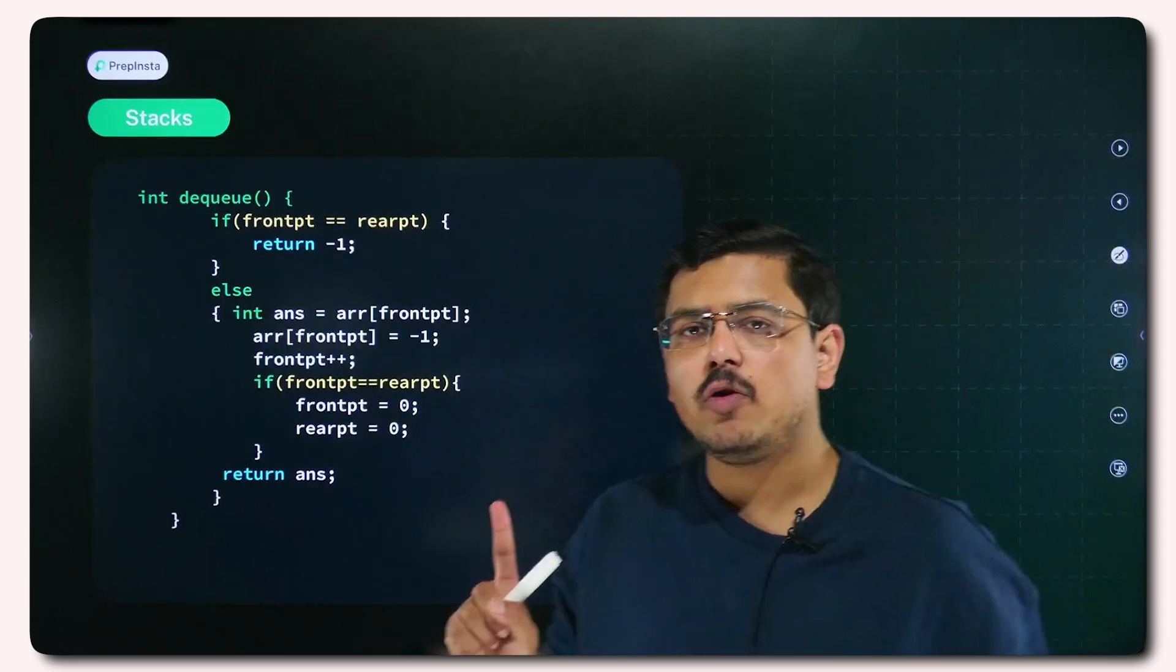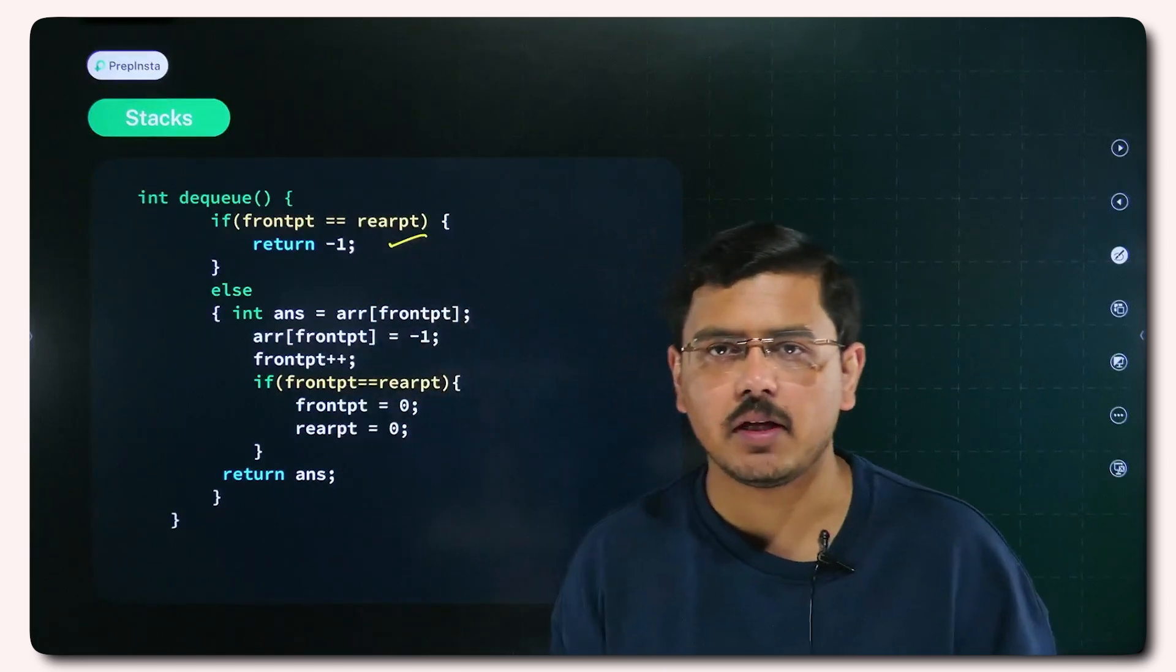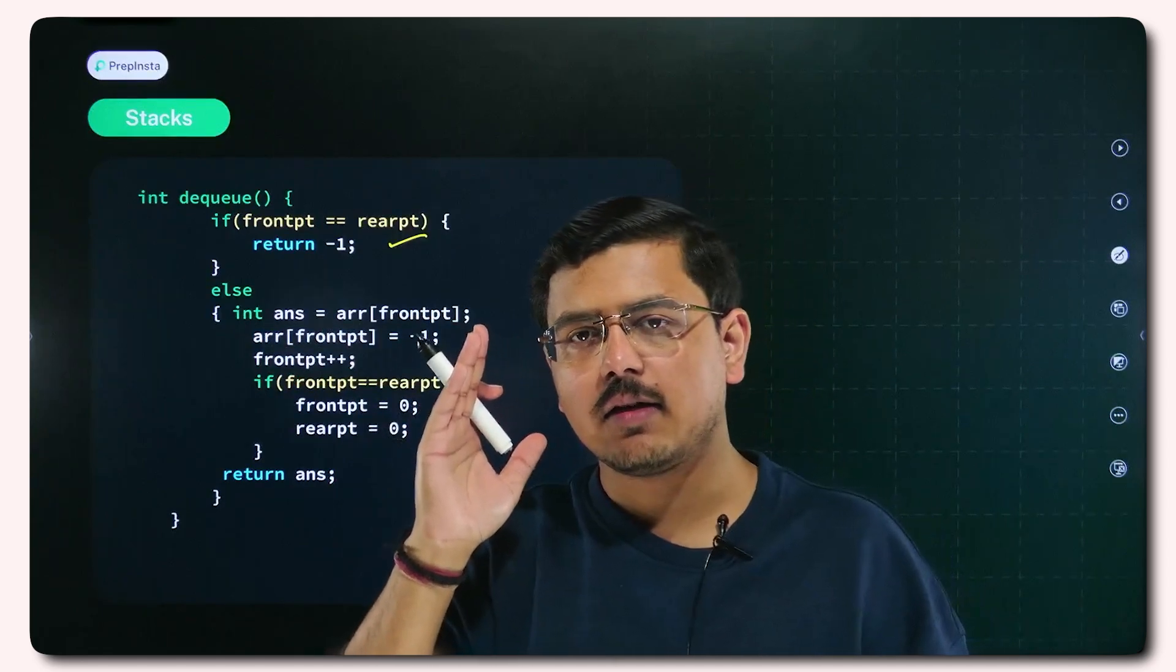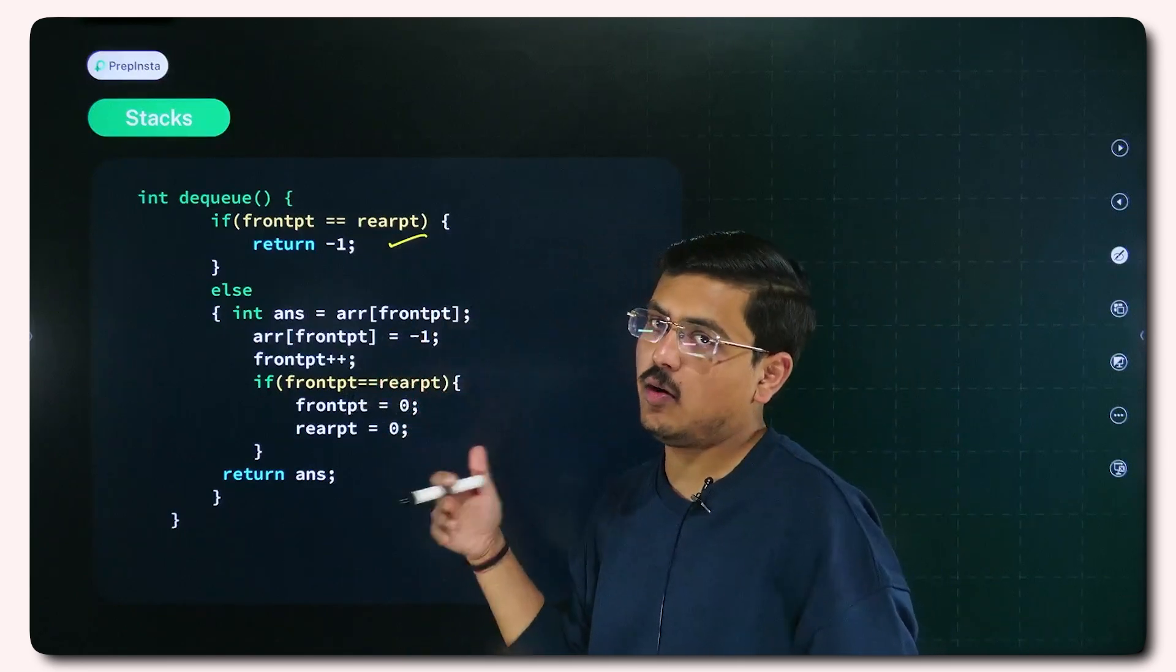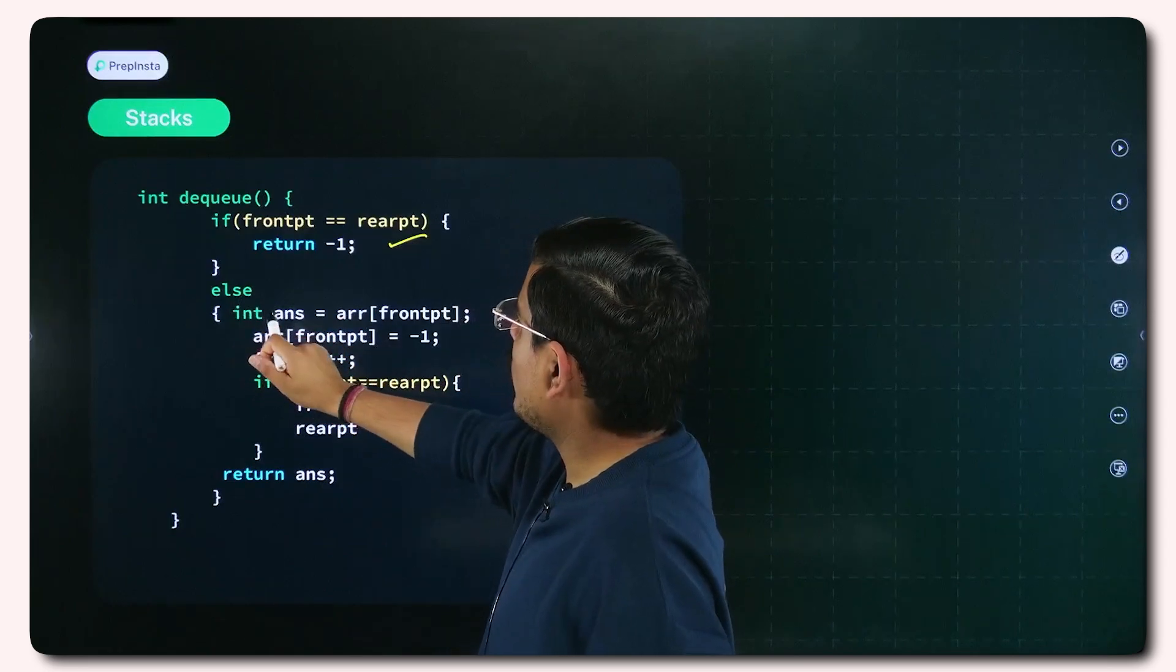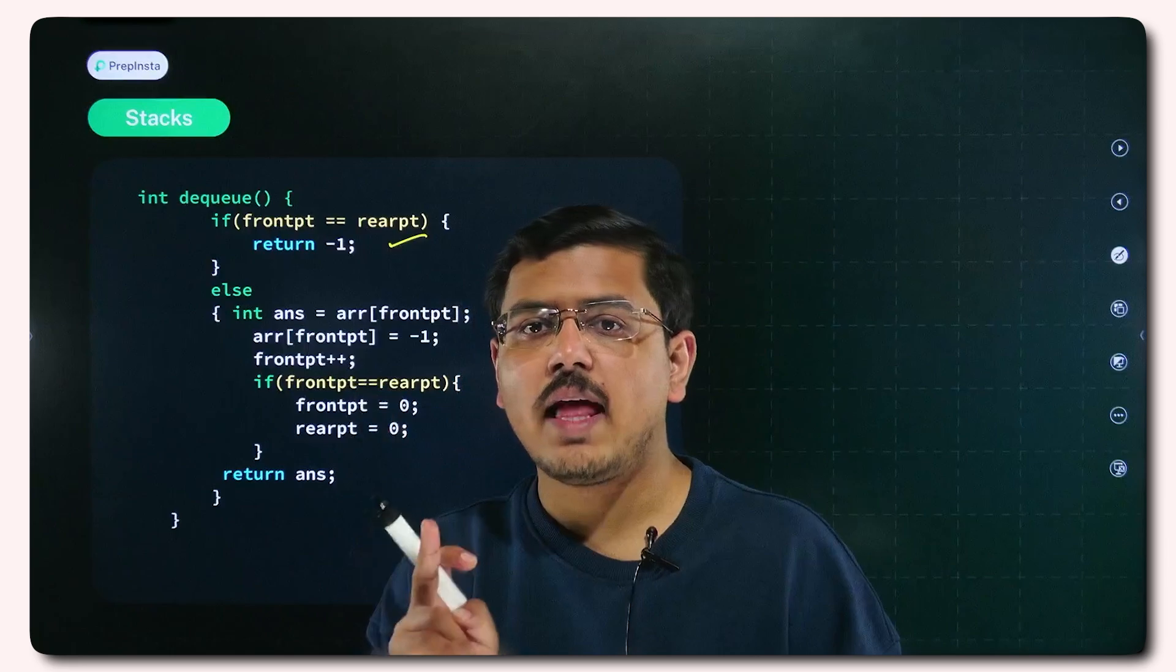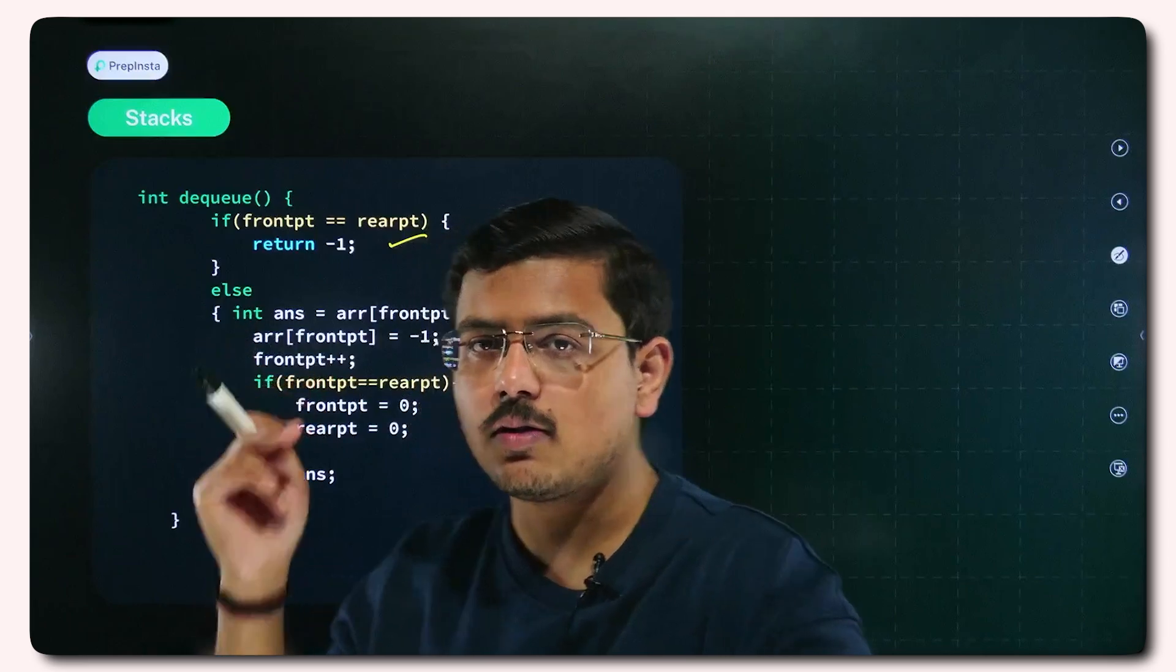For dequeue, first of all you need to check if front PT is equal to rear PT, then return minus 1. Basically if queue is empty, you can also use is empty function here if you want to. If that comes out as true, you are not dequeuing, you are simply printing that the queue is empty. Remember one thing, in queues first in first out.